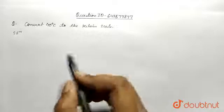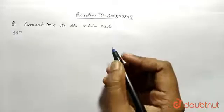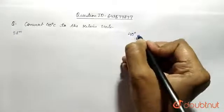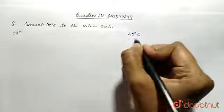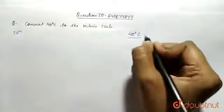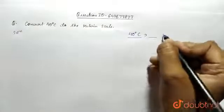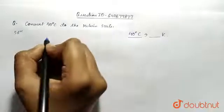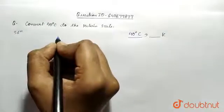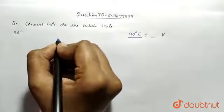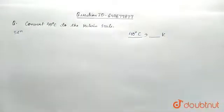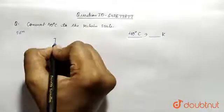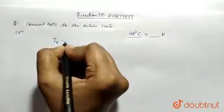So here the question says: convert 40 degrees Celsius to the Kelvin scale. So we have to find the equivalent temperature of 40 degrees Celsius in the Kelvin scale. The relation between degrees Celsius and Kelvin is given by T_K, temperature in Kelvin, is